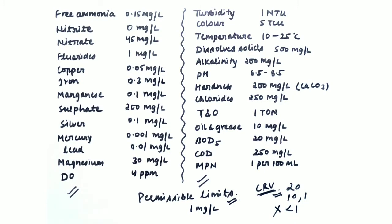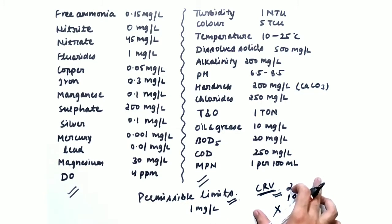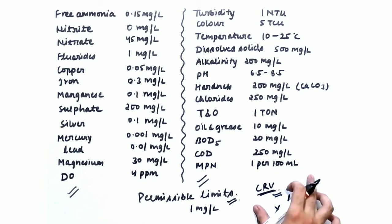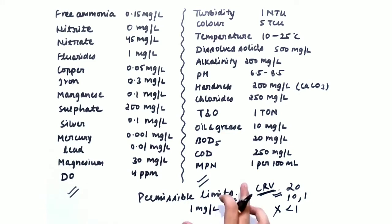When do we use CRV? We use it in extreme cases where values are not as usual. In those cases we do not look at permissible limits — we look at the cause for rejection value. It is also applied in cases where alternate water sources are not present and you have no other option. However, you cannot realistically remember the CRV for such a large number of elements and properties.